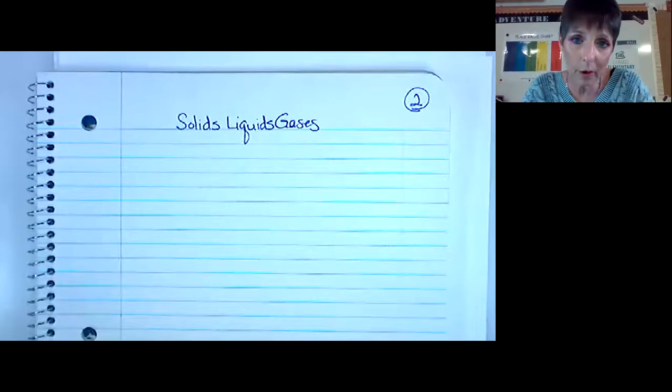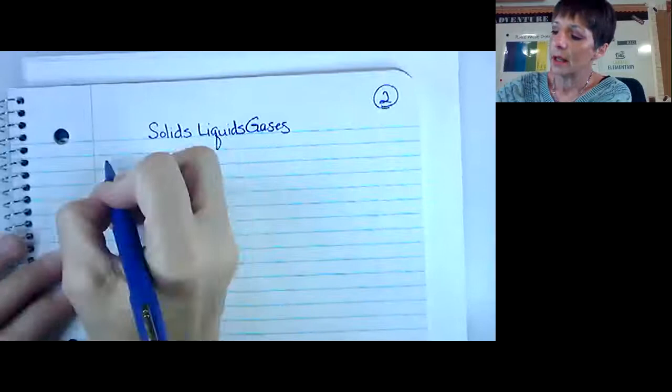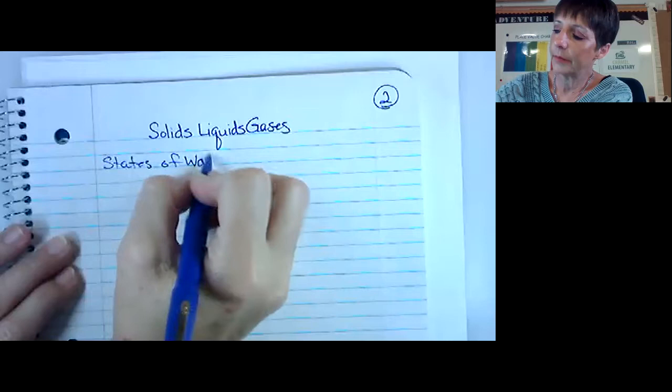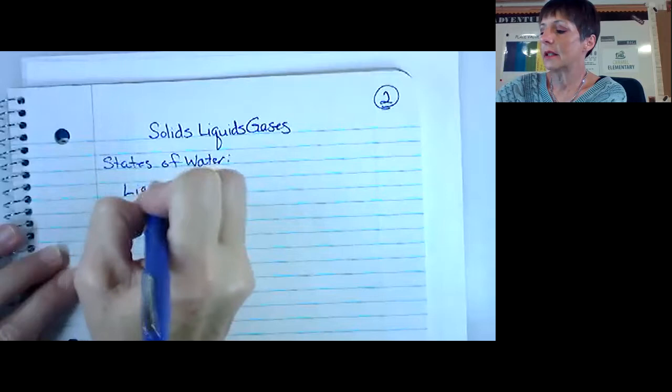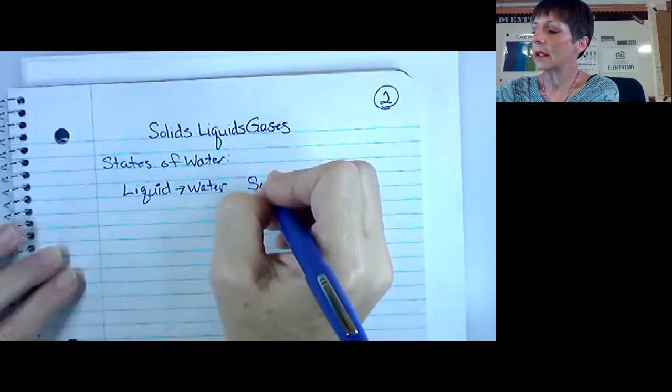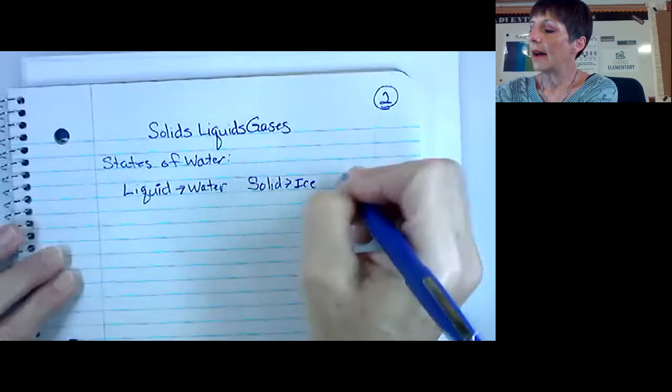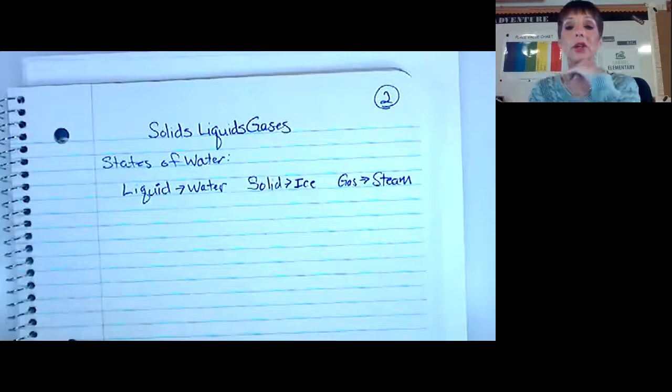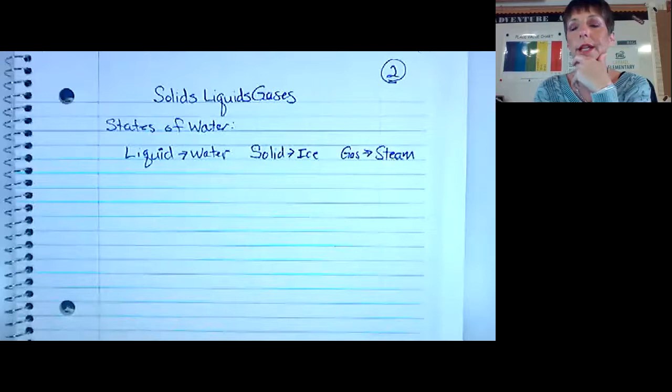In our notebook we're going to write states of water. We're going to start with the liquid state, that's just regular water, then we have the solid, that's ice, and then we have the gas, that is steam. Make sure you're writing in your notebook when Ms. Burton writes, you write. These are the physical states of water.